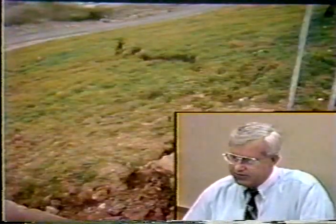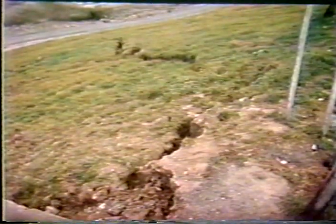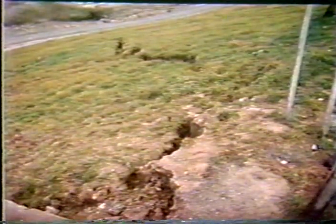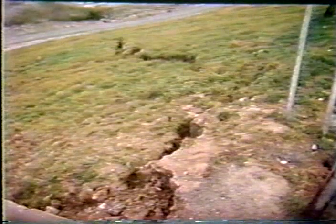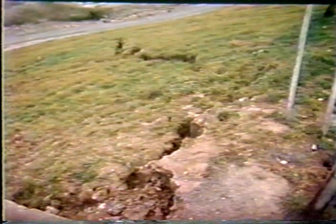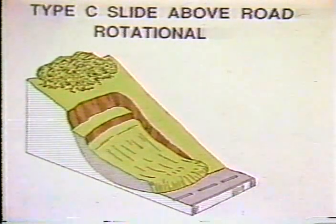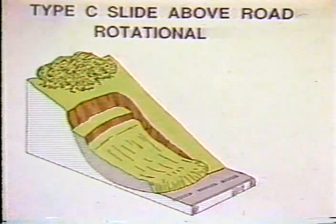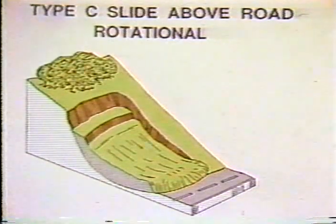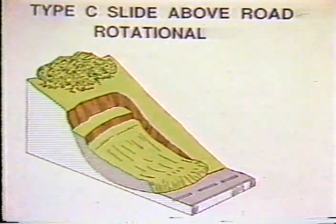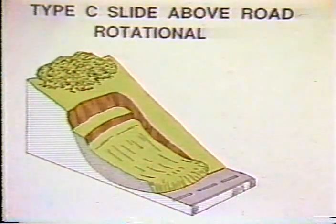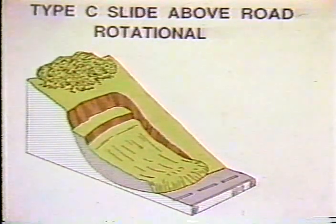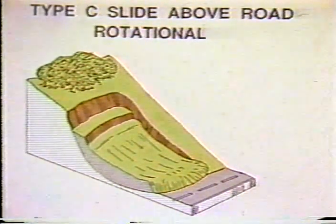Another very common type of slide seen along highways is a rotational failure — a slide above the road. These occur both above and below the road. Rotational failures usually occur in somewhat homogeneous materials. An example of a small rotational failure above the road in a cut slope shows a scarp that is almost vertical. This particular slide has two features: it's rotational, but also has a mud flow component.